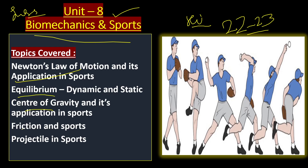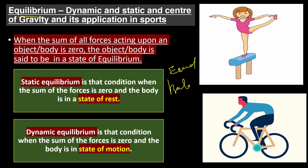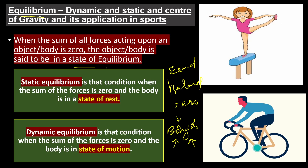Today we will study equilibrium, center of gravity, friction, and projectile. First our topic is equilibrium. When you hear the word, think: equal, balanced, or zero. What is equilibrium? When the sum of all forces acting upon an object or a body is zero, the object or body is said to be in a state of equilibrium. There are two types of equilibrium: static and dynamic.